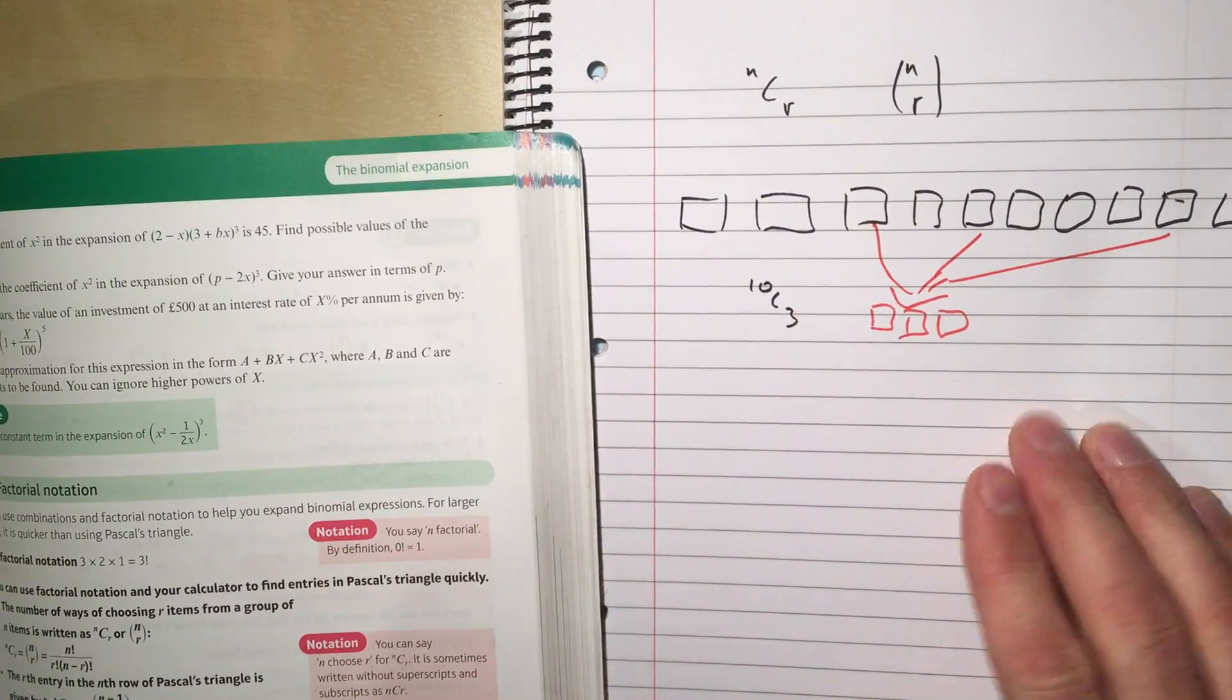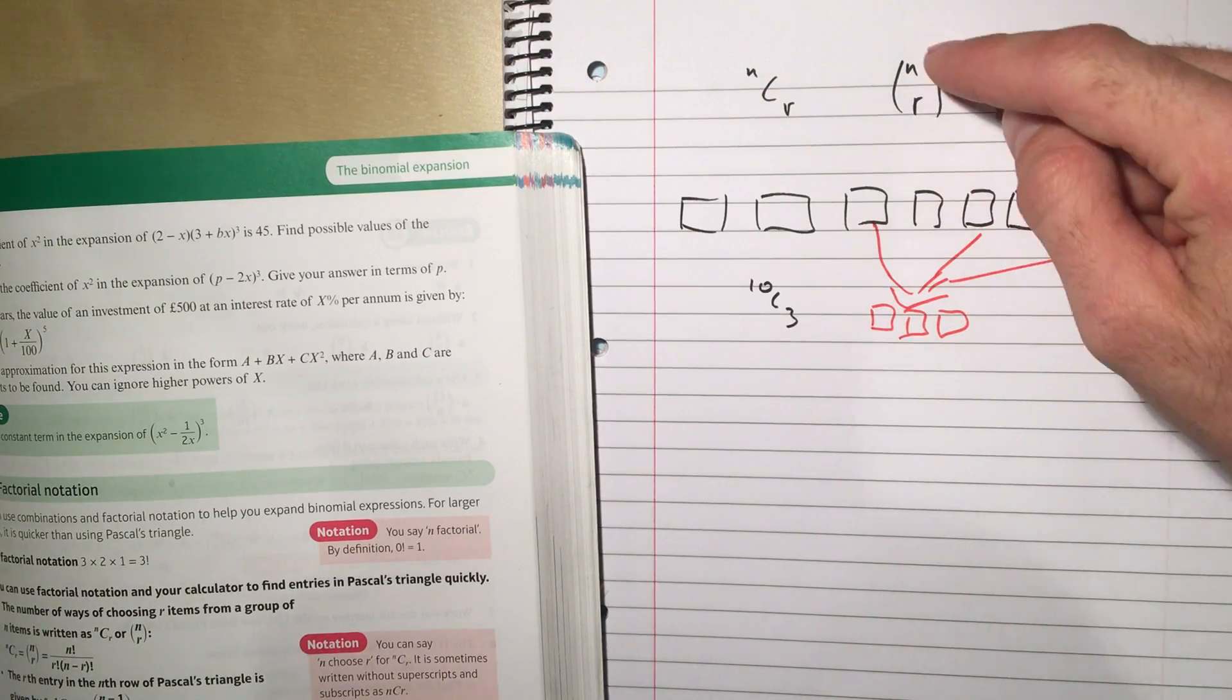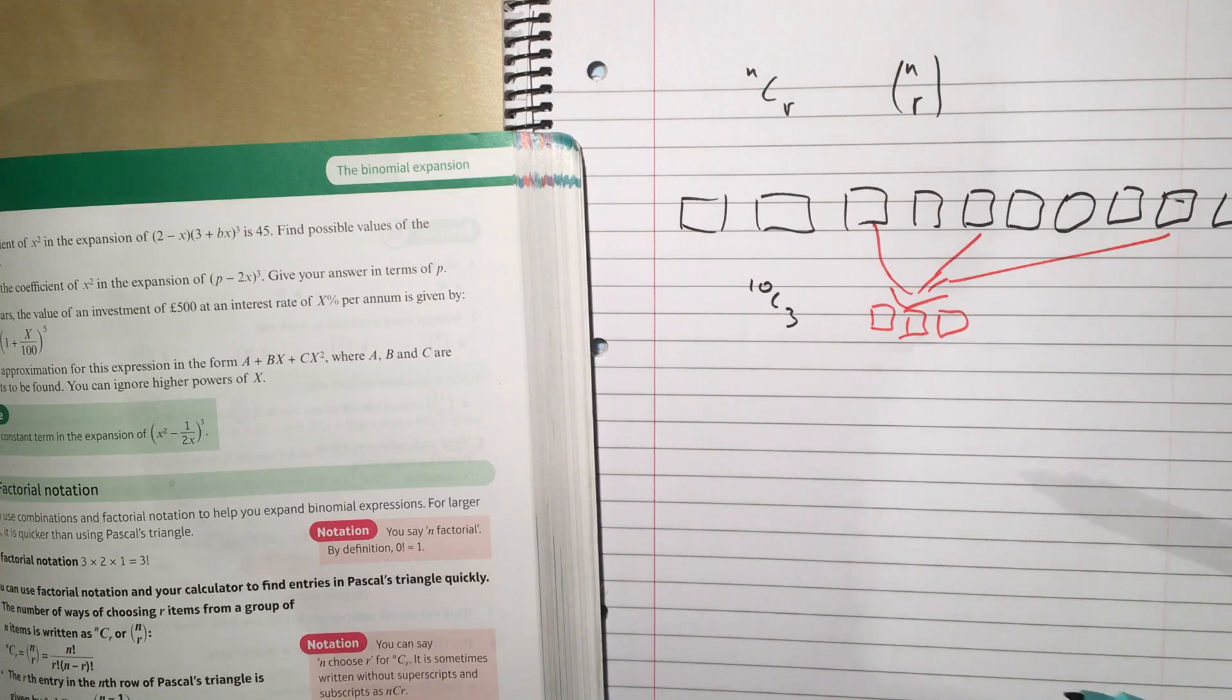That is notated by the number nCr, n choose 3, or n r, which we still pronounce n choose 3.